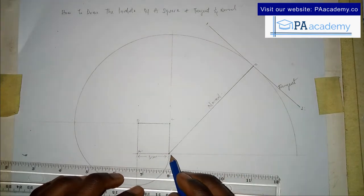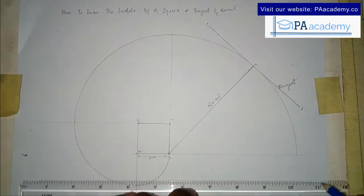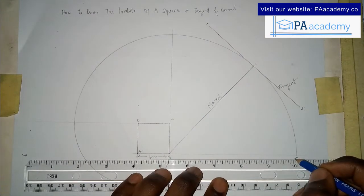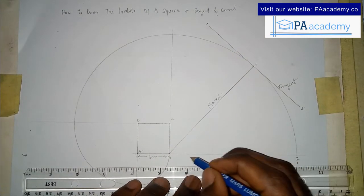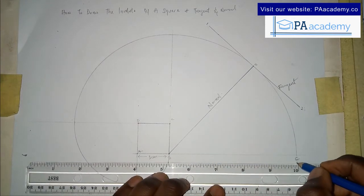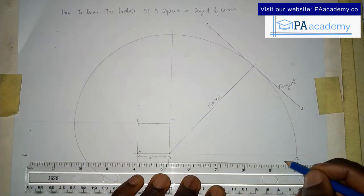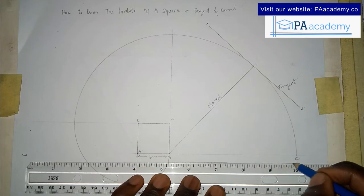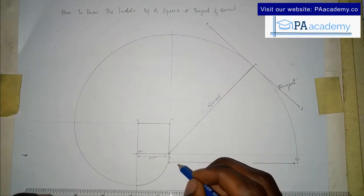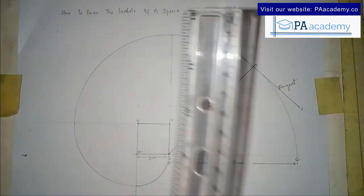The line from point one to point two represents the tangent. From this point to point B — let's call this point E — represents the normal. Now let's indicate the measurements: from point A to point B is three centimeters, and from point E to this point is 12 centimeters.